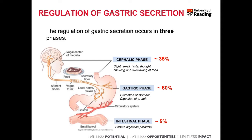In the cephalic phase, the sight, the smell, the taste, even the thought of food, and also the chewing and swallowing of food activates the secretion of hydrochloric acid, pepsin, and pepsinogen in the stomach. It's an external stimulus — external to the stomach — which, thanks to the extrinsic nervous system, mostly the parasympathetic nervous system via vagal nerve activation of cholinergic-sensitive cells, parietal cells, and enterochromaffin-like cells, leads to the release of pepsin and hydrochloric acid.